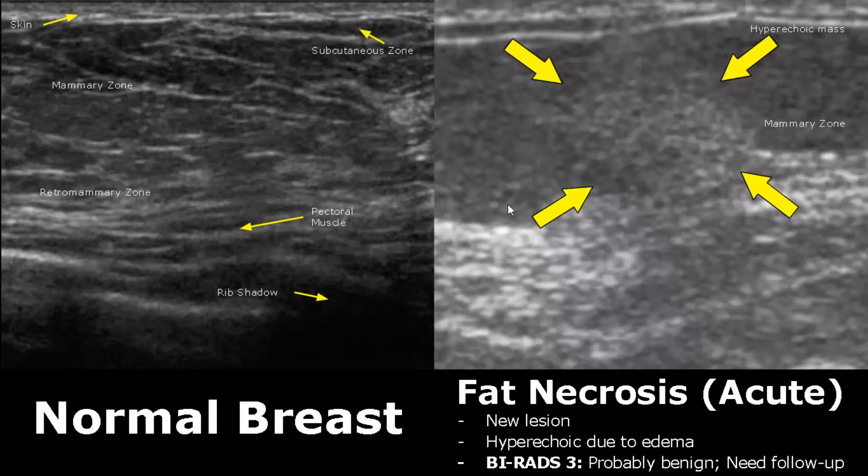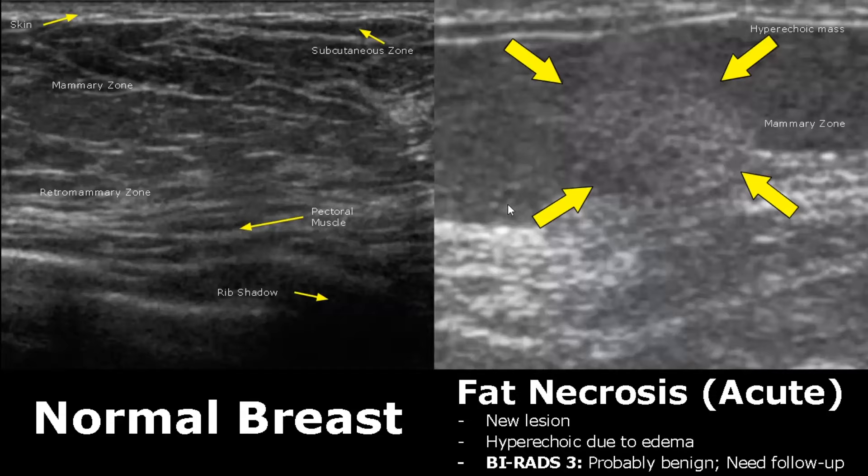Fat necrosis has a variety of appearances. In the acute phase, the lesion is new, so it may appear as a hyperechoic lesion due to edema. Fat necrosis appearances overlap with malignant lesions, so a follow-up is required, and it is rated as BI-RADS 3.